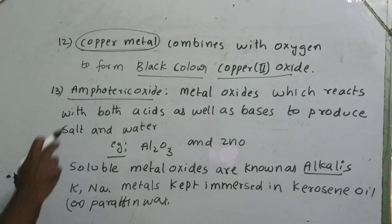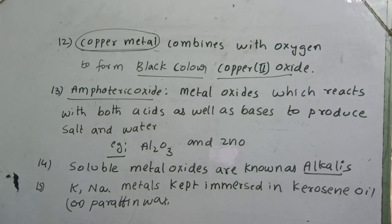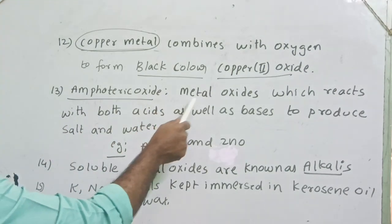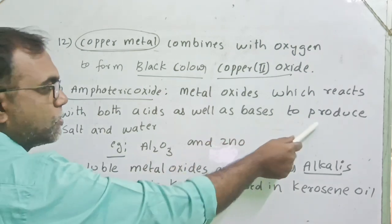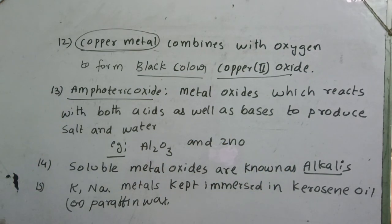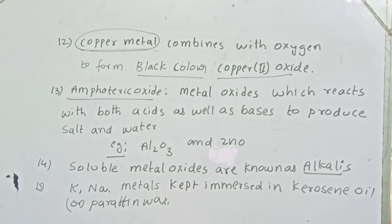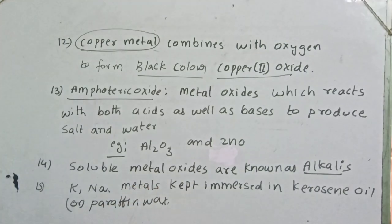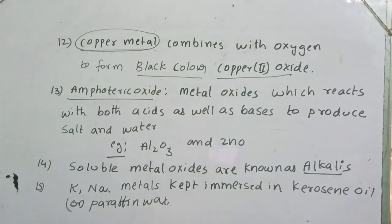Amphoteric oxides are metal oxides which react with both acids as well as bases to produce salt and water. Examples of amphoteric oxides are aluminium oxide (Al₂O₃) and zinc oxide (ZnO). The soluble metal oxides — and even soluble metal hydroxides — are known as alkalis.